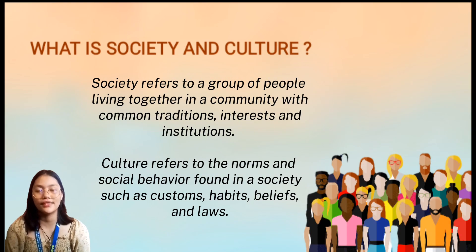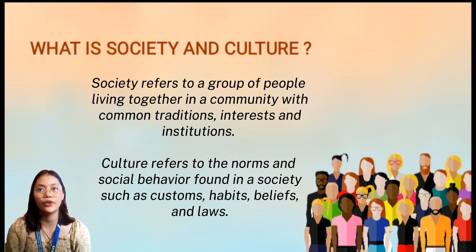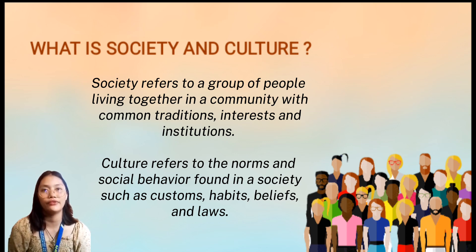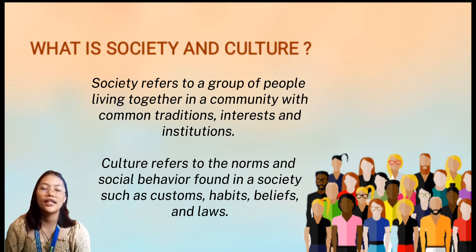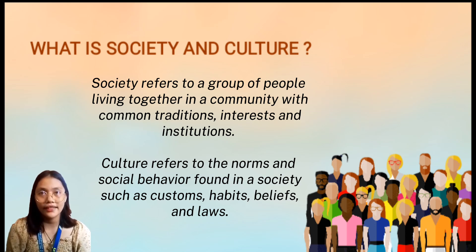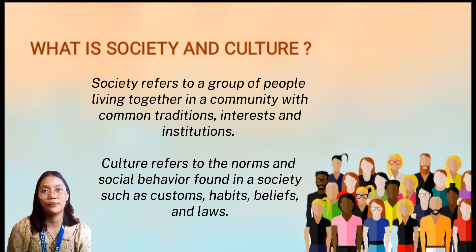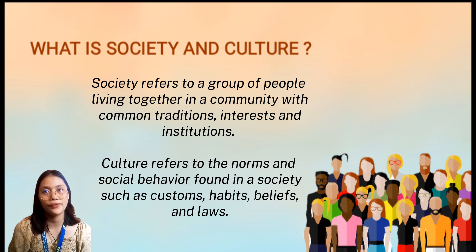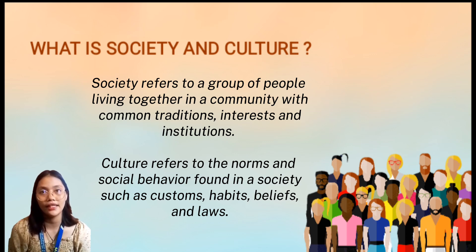The second word is society and culture. Society refers to a group of people living together in a community with common traditions, interests, and institutions. Culture refers to the norms and social behavior found in society such as customs, habits, beliefs, and laws. Society and culture are part of a person's life which can affect or influence them. When a society and culture develops and implements inclusion, a person would learn to practice inclusion.